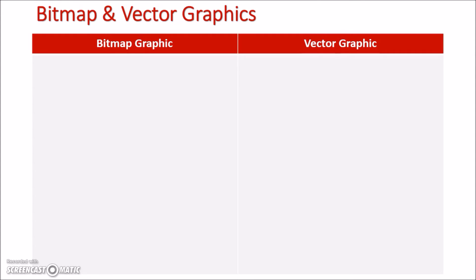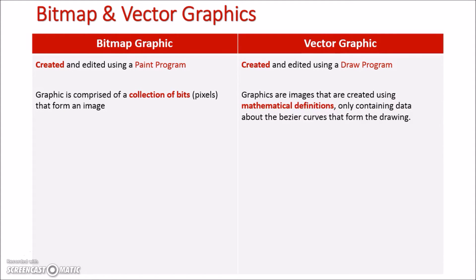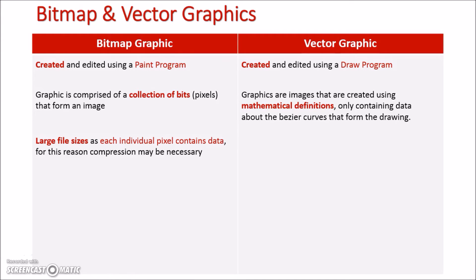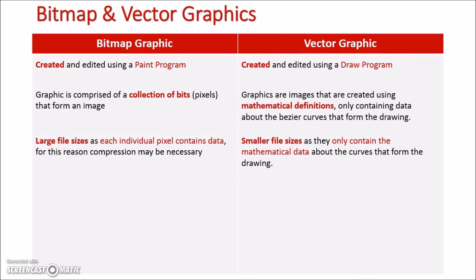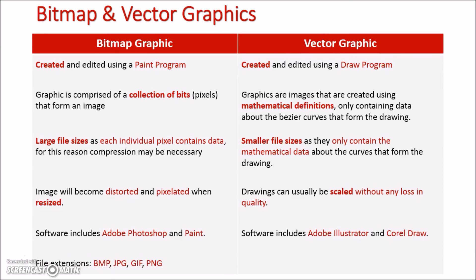So now let's summarise the two graphics side by side. Bitmap graphics are created in a paint program; vector graphics in a draw program. Bitmap graphics are a collection of pixels that form an image; vector graphics are a series of mathematical definitions for lines and shapes created in Bezier curves. Bitmap graphics have large file sizes as they store data on every pixel. Vector graphics have only information on the mathematical equations, making their file sizes smaller. In bitmap graphics, if the image is resized it becomes distorted or pixelated; vector graphics can be scaled without any loss of quality. Software for bitmap includes Adobe Photoshop and Paint; vector includes Illustrator and CorelDRAW. File extensions for bitmap are BMP, JPEG, GIF, and PNG; for vector, AI, DWG, and EPS.